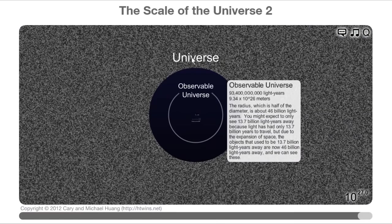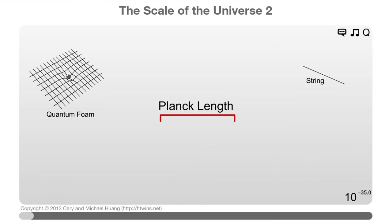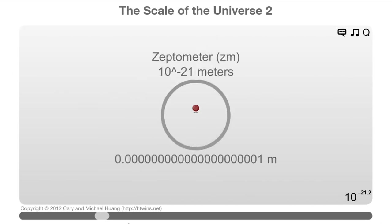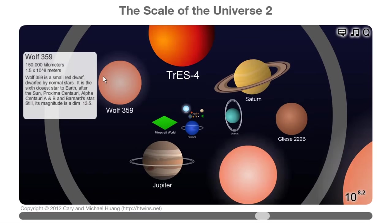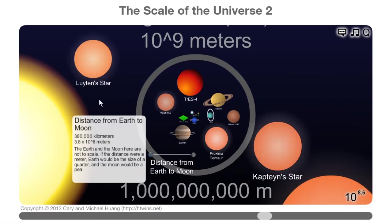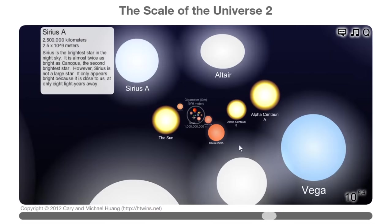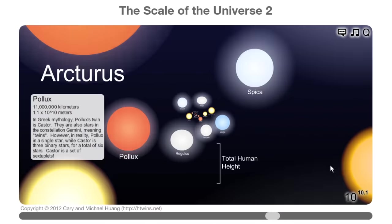The largest one is the observable universe, the smallest one is the Planck length, and the one I get the most comments about is definitely the Minecraft world. For each of these objects, I wrote a three to five sentence description about the object, and I used varying levels of professionalism versus playfulness.